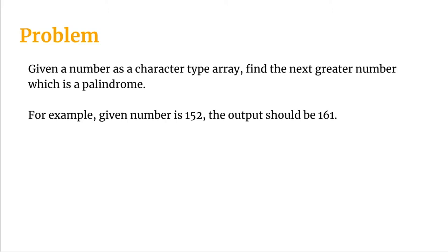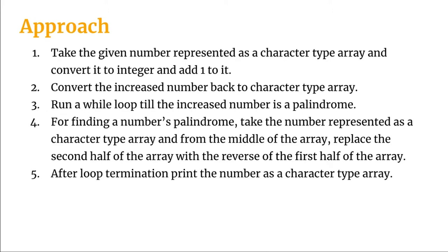Let's have a look at the approach. We'll first take the number given as a character type array and we'll convert it to integer and add 1 to it. Then we will convert the increased number back to character type array. Now we'll run a while loop till the increased number is a palindrome.